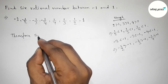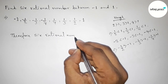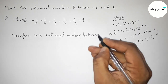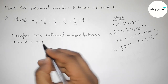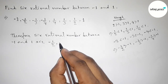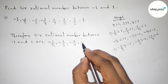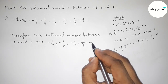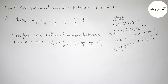So therefore the 6 required rational numbers between minus 1 and 1 are: minus 1/4, minus 1/3, minus 1/2, 1/4, 1/3, and 1/2. That's all. Thanks for watching. If this video is helpful to you, please share it with your friends.